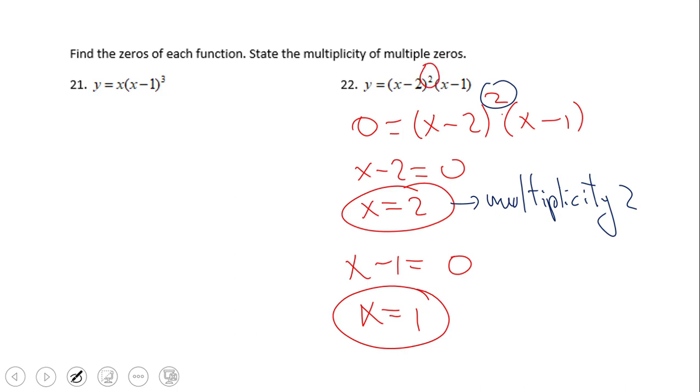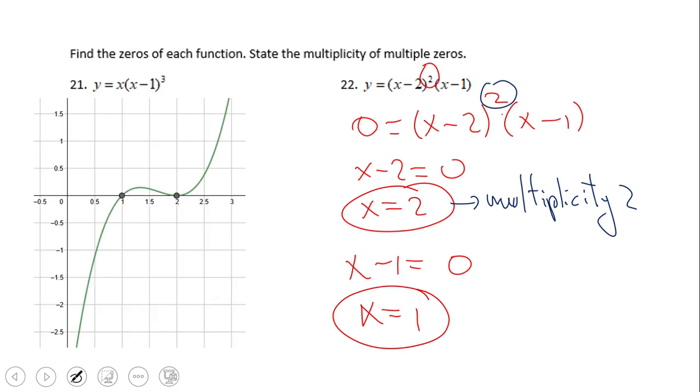Let's take a look at our graph. This is the thing that is very interesting here about multiplicity of two, or four, or six, or eight. Whenever you have an even number, the graph is going to touch the x-axis and it's not going to cross the x-axis at that point.